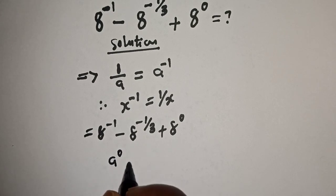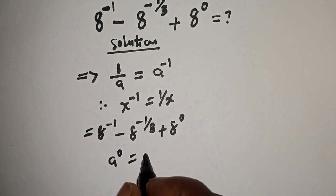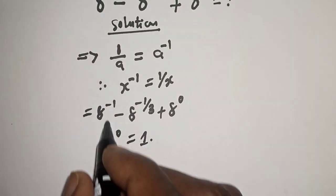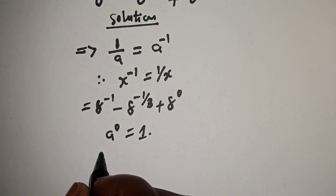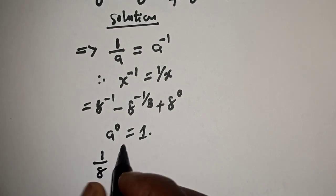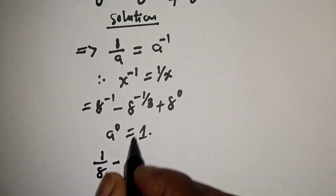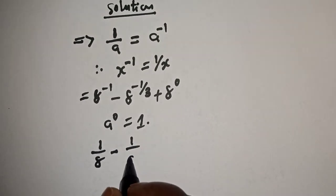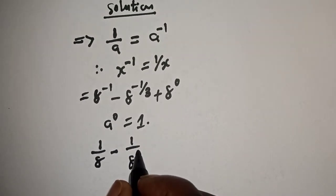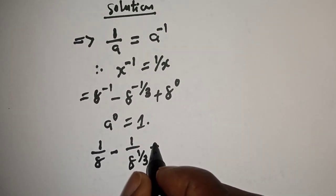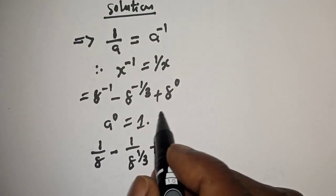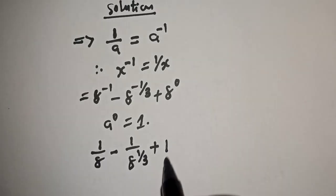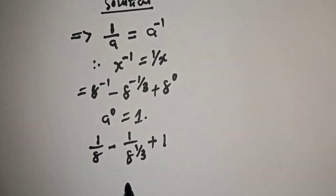Now, a raised to power 0 is always equal to 1. So this becomes 1 over 8, minus 1 over 8 raised to power 1 over 3, plus 1.